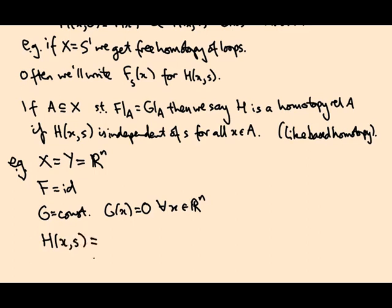So these guys are homotopic. The identity is homotopic to a constant map, which you can get by just rescaling by s. Alright, so when s is 1 you get H(x,1) = x. So that's the identity, that's F. And when s is 0 you get 0 times x.